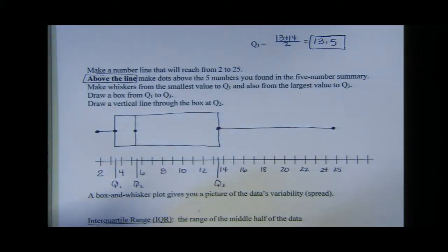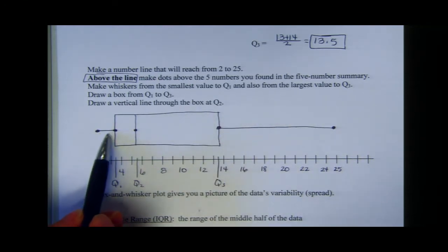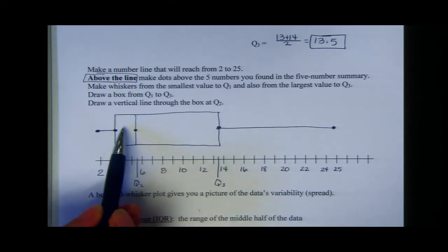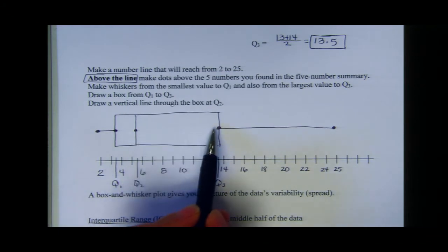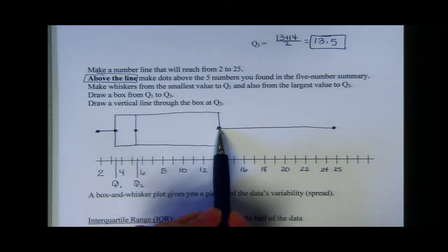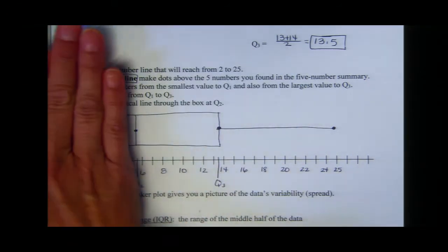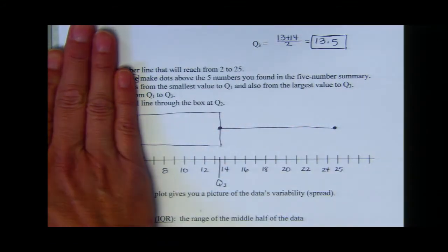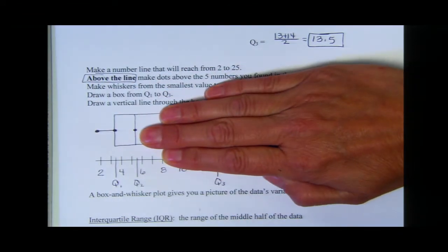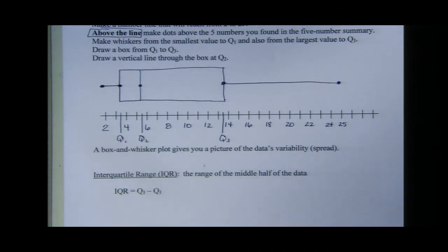We now have four parts. 25% of the data falls within the left whisker, 25% from quartile one to quartile two, 25% from quartile two to quartile three — notice it's more spread out — and 25% from quartile three to the largest number. This gives a visual that the upper half of the data is more spread out than the lower half, providing a picture of what is going on.